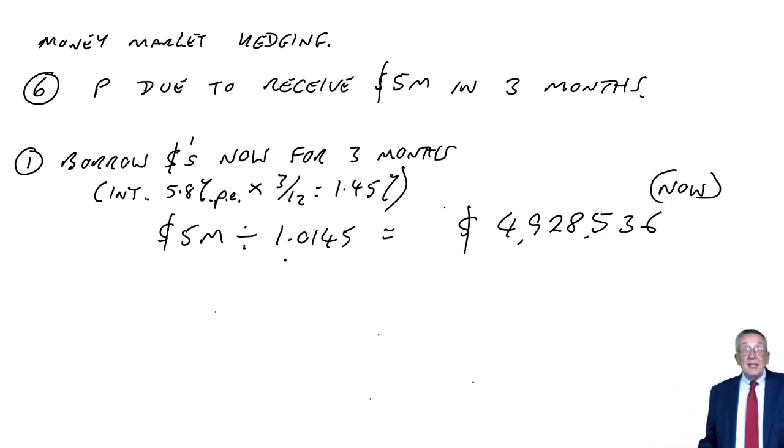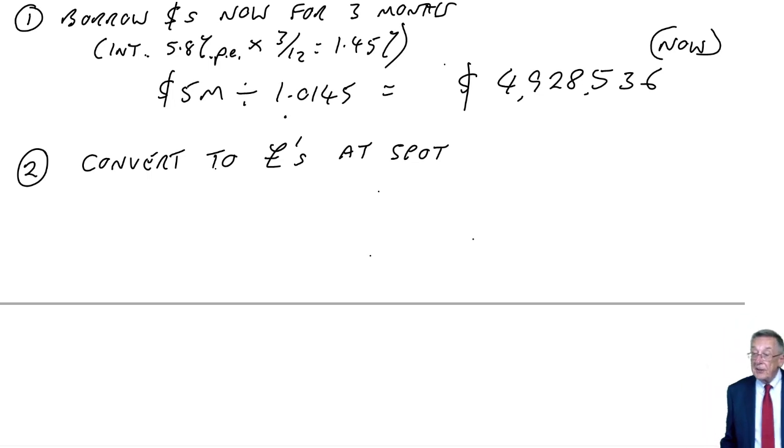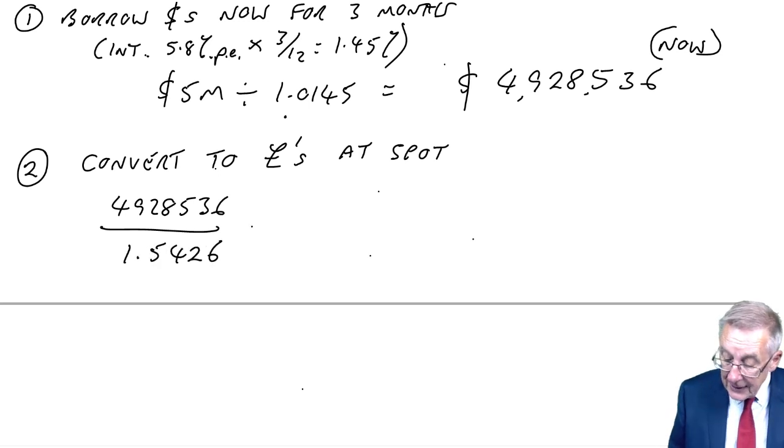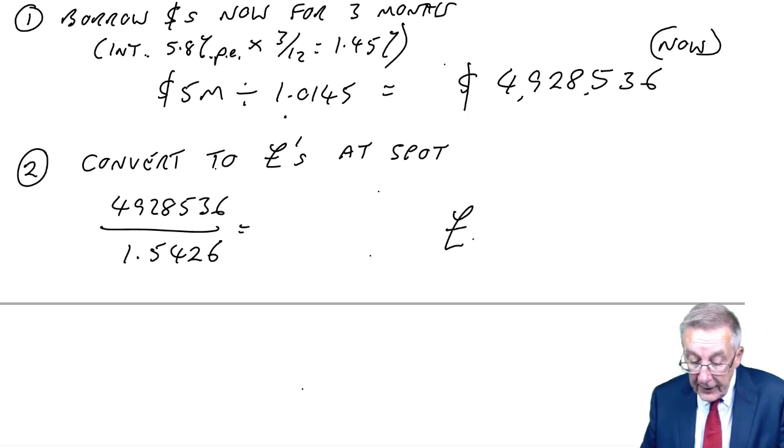Why do I do that? Because now that I've got these dollars, I can convert to pounds at today's exchange rate. So step two, convert to pounds at the spot rate, which is fixed, of course, today's spot. And so which way round? We've got 4,928,536 dollars. We're now going to sell those dollars to the bank to convert them to pounds. And so the dollar sell rate is 1.5426. It converts to 4,928,536 divided by 1.5426, which equals 3,194,954 pounds now.